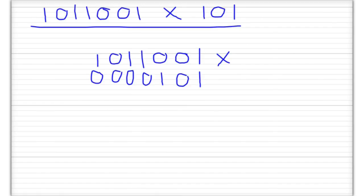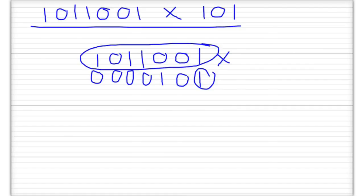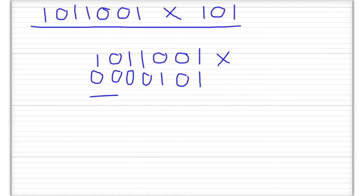Now what we need to do is start with this digit on the bottom and multiply it by each digit in the top row, starting with the rightmost digit. So we'll do 1 times 1, 1 times 0, 1 times 0, 1 times 1, 1 times 0, and 1 times 1 — starting from the right and moving to the left. So: 1 times 1 is 1, 1 times 0 is 0, 1 times 0 is 0, 1 times 1 is 1. So we've done this digit.